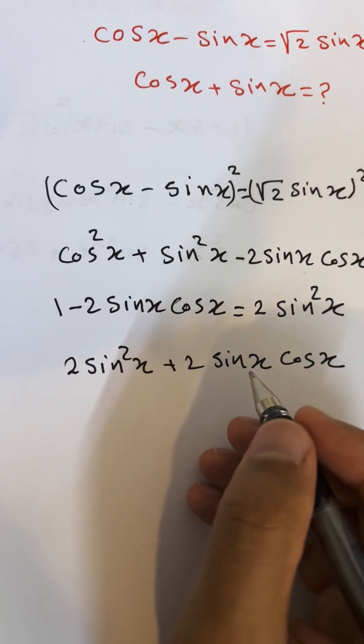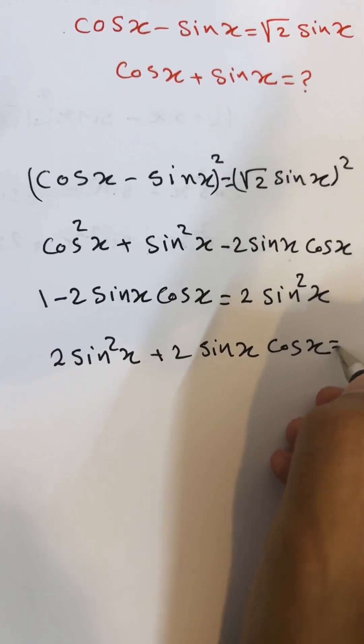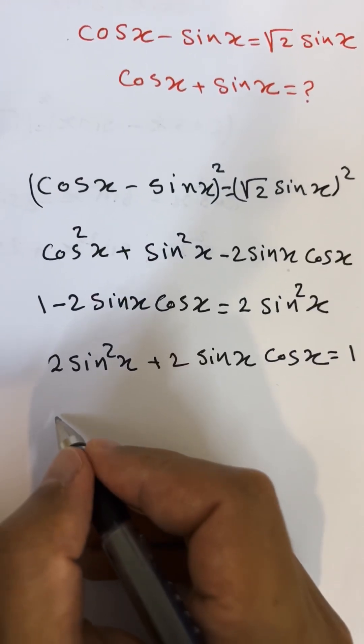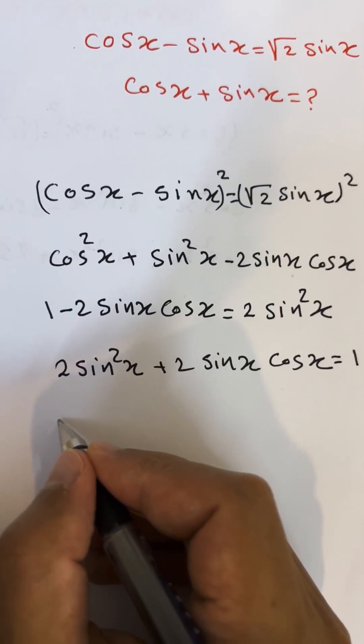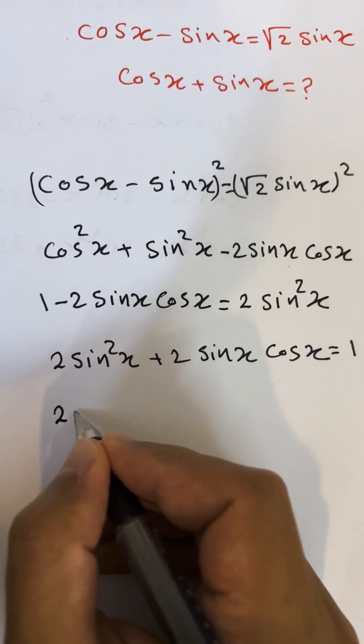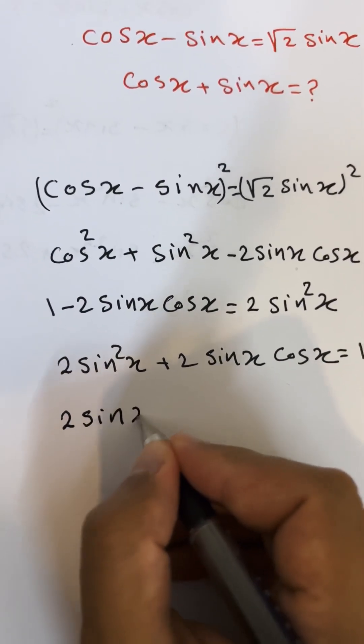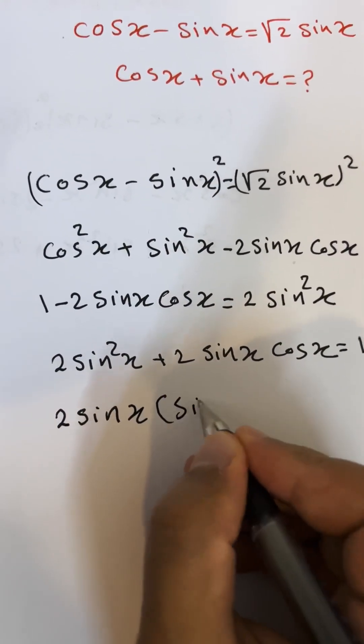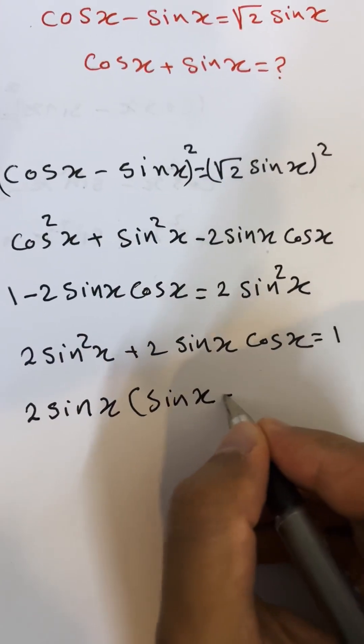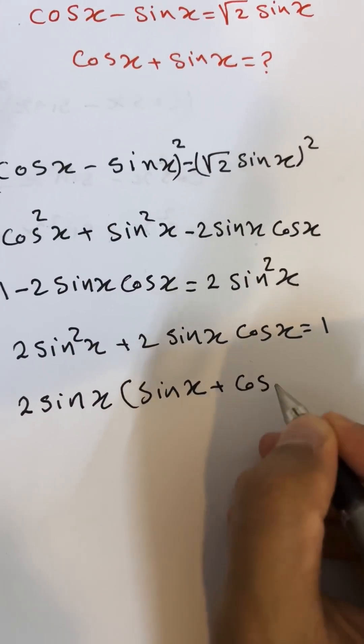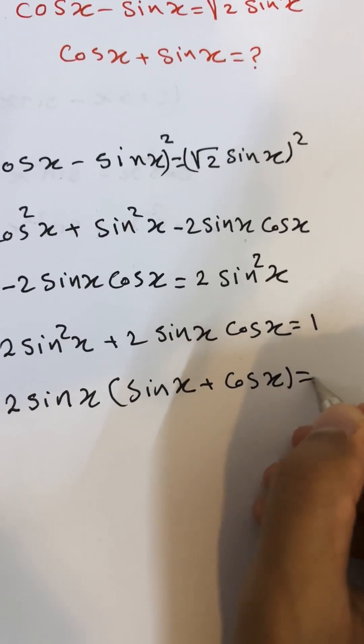Here, sine x. We can take the common factor. Don't forget here it equals 1. Take 2 sine as a common factor. What is the rest here? If I have sine x, and here it will be cosine x, equals 1.